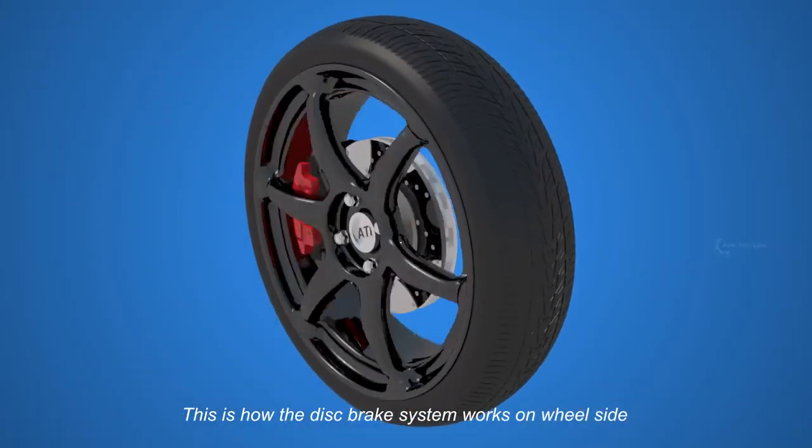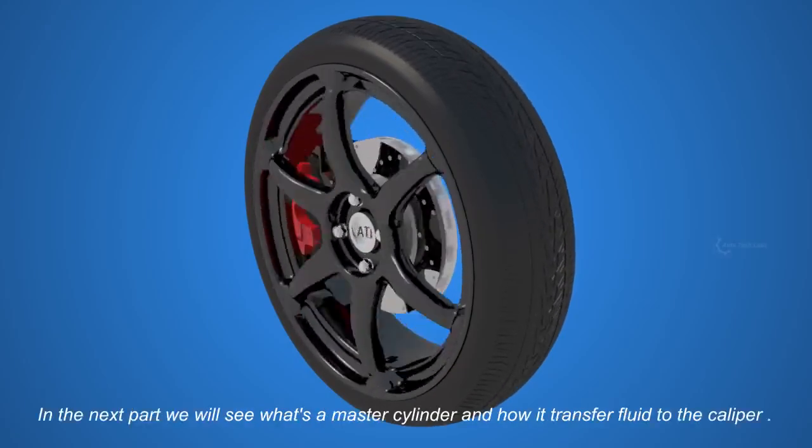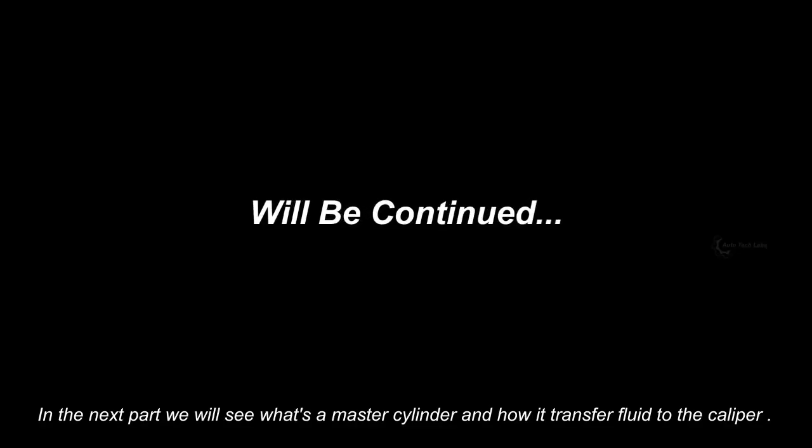This is how the disc brake system works on wheel side. In the next part, we will see what's a master cylinder and how it transfer fluid to the caliper.